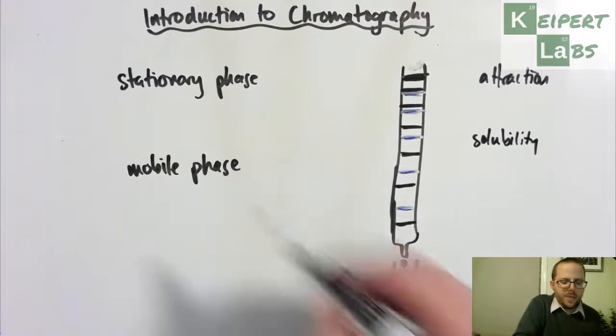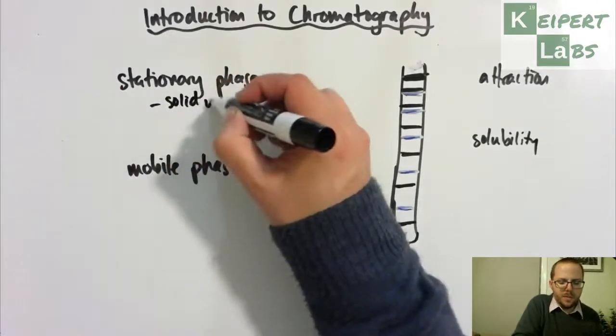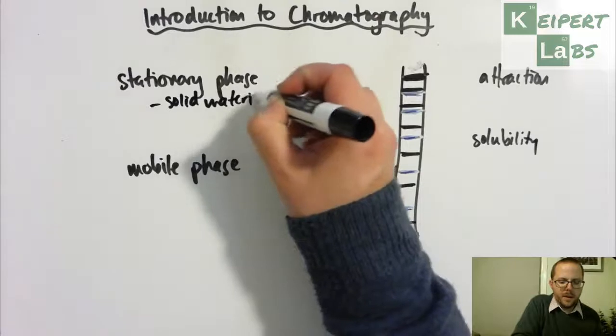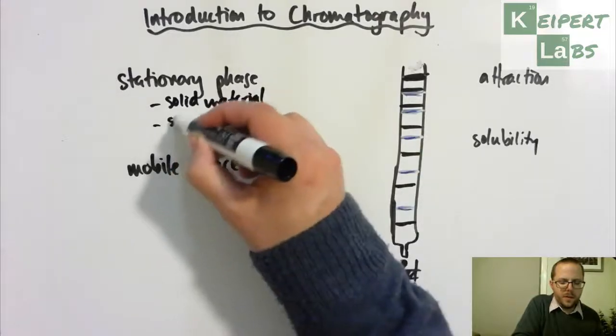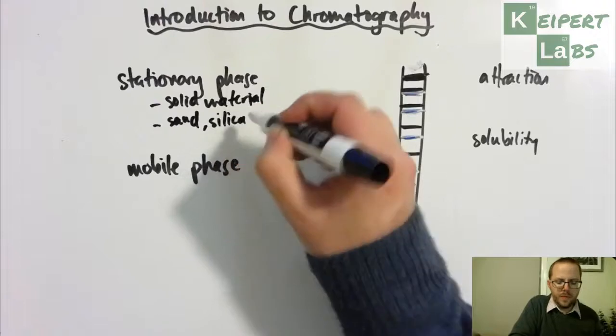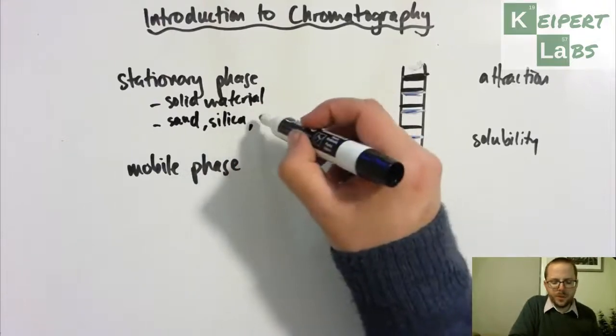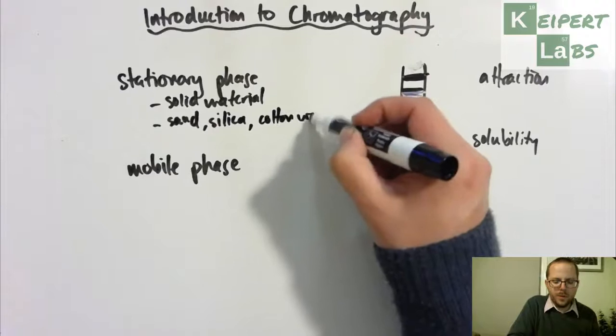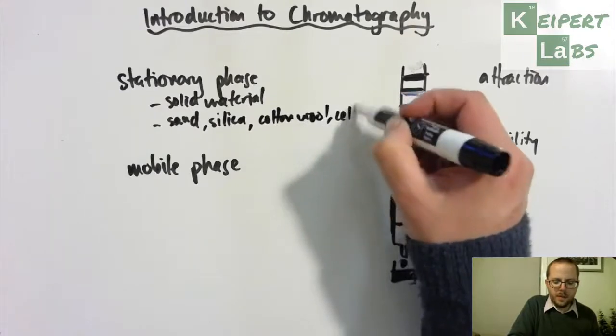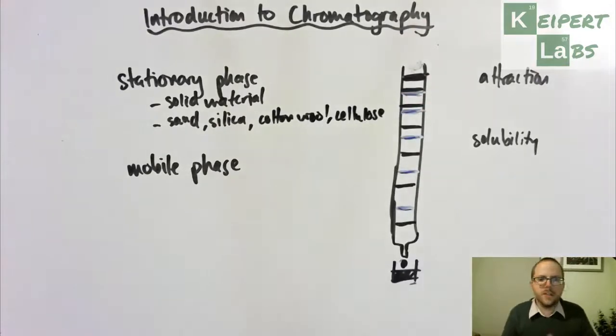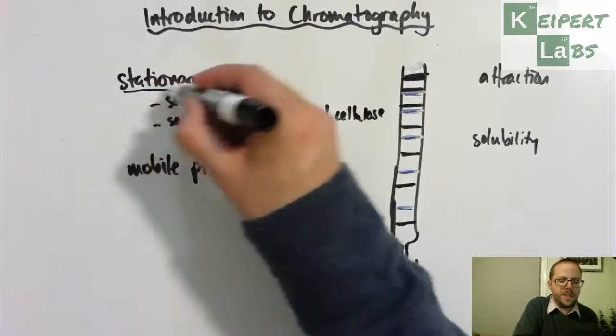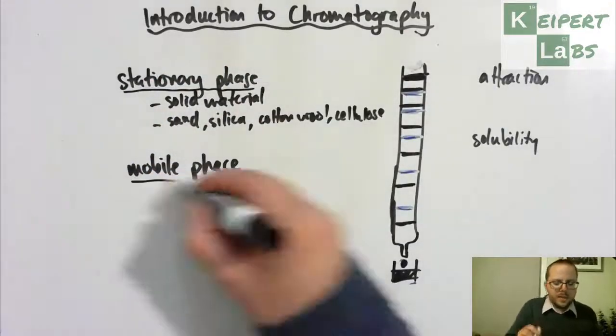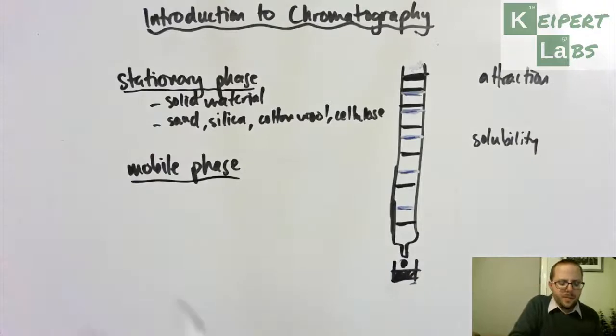Now, the stationary phase is typically a solid material. It could be sand, silica, it could be cotton wool, cellulose, like in paper chromatography. So it's some form of solid material. But the key thing is that it is stationary, the idea that it's fixed.